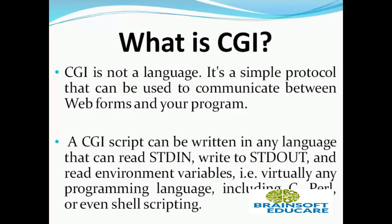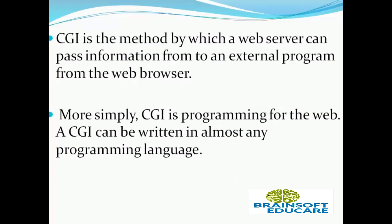A CGI script can be written in any language that can read stdin and write to stdout, and read environment variables — that is virtually any programming language including C, Perl, or even shell scripting. CGI programs are essentially just programs that are stored on a web server, often called by HTML forms to do some form of data processing.